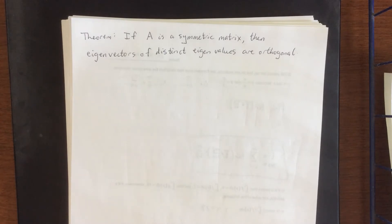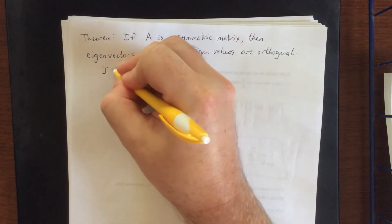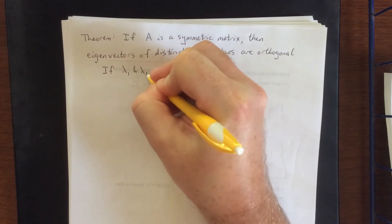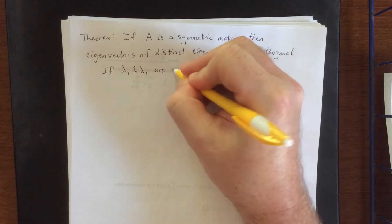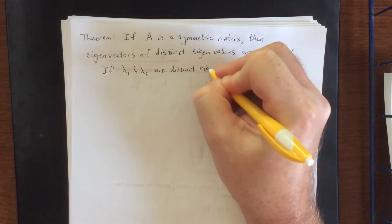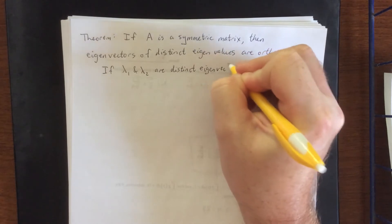Now put into words what this means is if you have two distinct eigenvalues, and by distinct I mean not equal to each other.